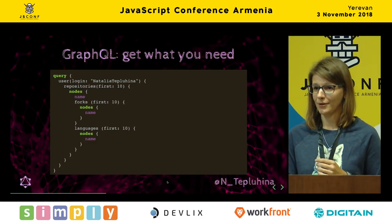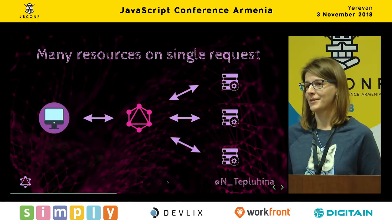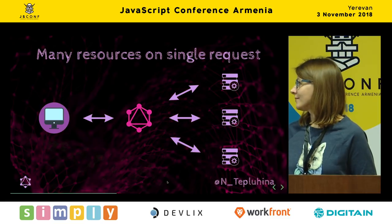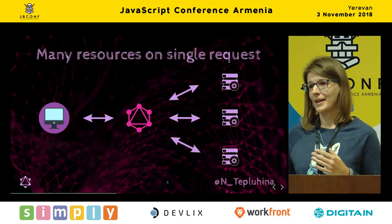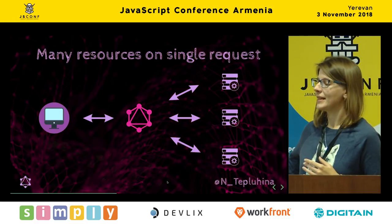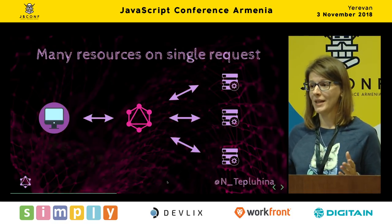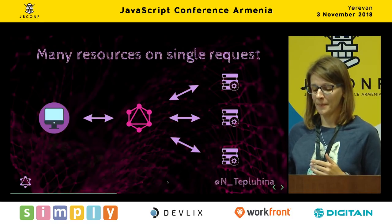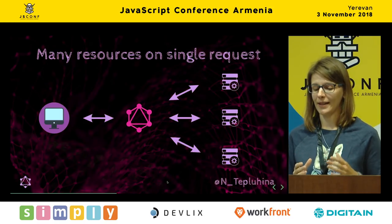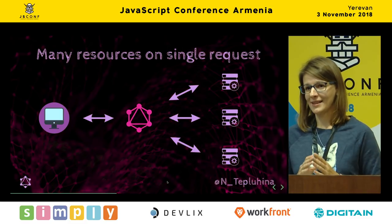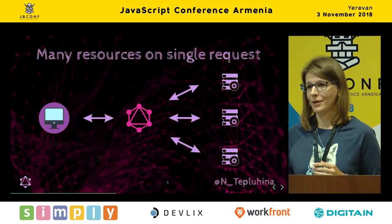The next great feature is you can use many resources in a single request. You can use GraphQL as a data layer — GraphQL will care about fetching data from your backend resources, whether it's a database, a microservice, Elasticsearch, or even a REST API. It will package everything into GraphQL form and send it to your client. Your client doesn't need to know anything about these backend resources.